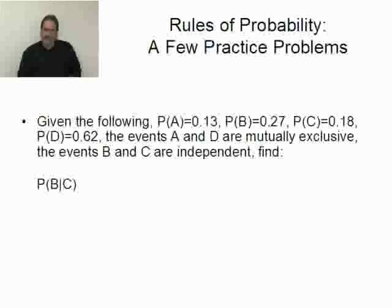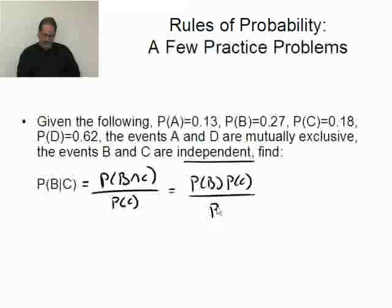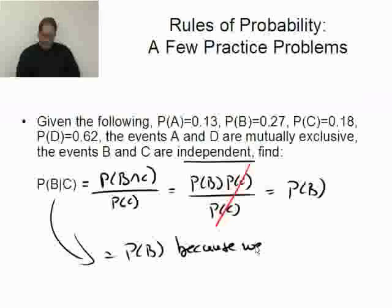Probability of B given C. Well, I already kind of alluded to that. This is equal to the probability of B and C divided by the probability of C. However, because I know that the events B and C are given to us as being independent, this is the probability of B times the probability of C divided by the probability of C. The C's cancel out and I'm left with the probability of B. I know that because they're independent. Right away I could have said, hey,